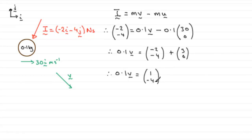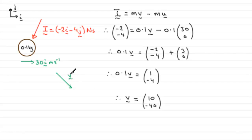Now divide both sides by 0.1, or multiply both sides by 10. The final velocity vector v is equal to 10, minus 40. Looking at the sketch, it's not drawn to scale, but at least we've got 10 units in that direction and 40 units down. So there's our final velocity vector.